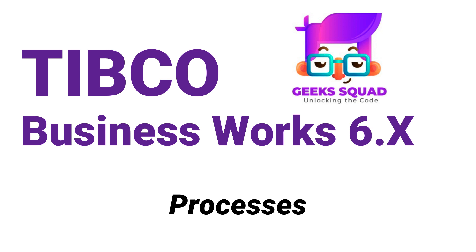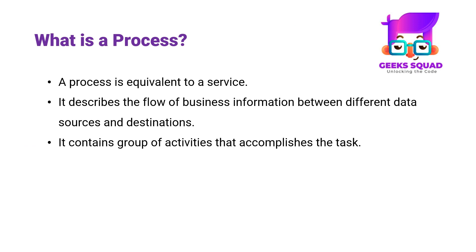So let's see what is a process first. A process is an equivalent to a service. Basically, it describes the flow of business information between different data sources and destinations. It contains a group of activities that accomplishes the task. The flow of data between the activities in a process is represented using transitions, conditions, and mappings.